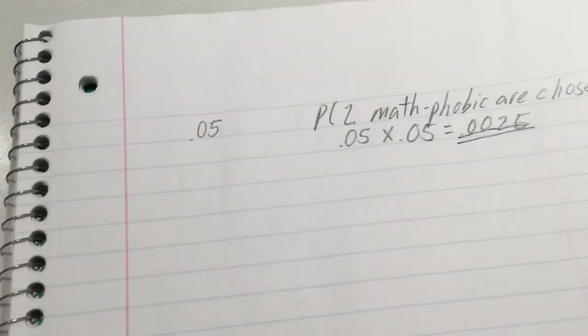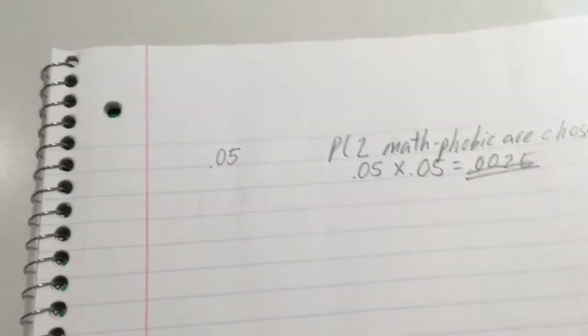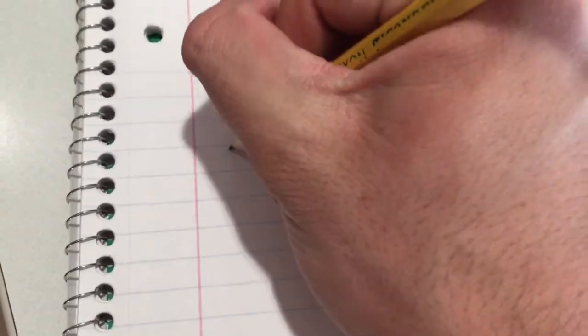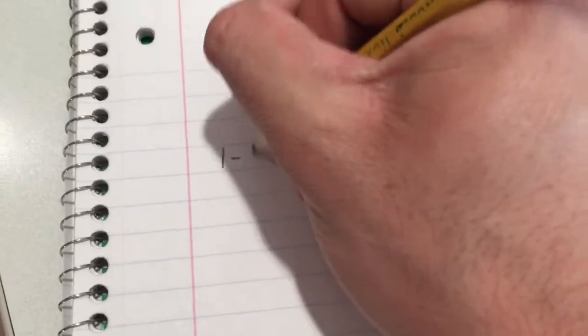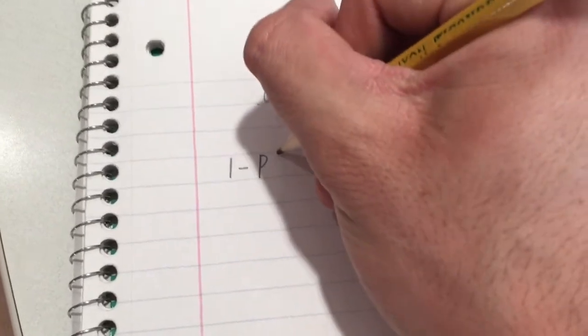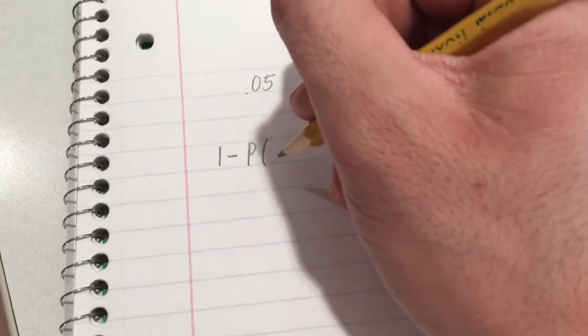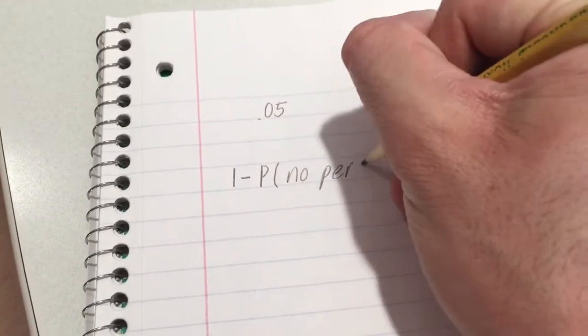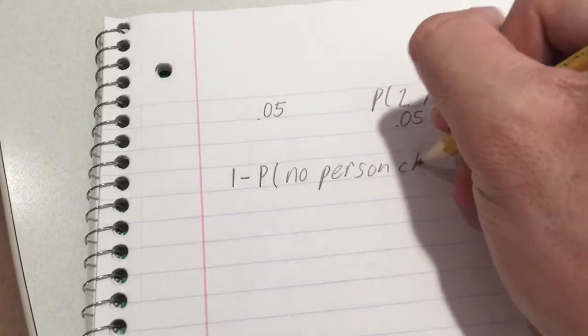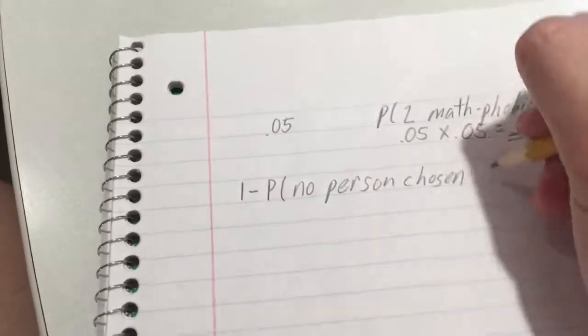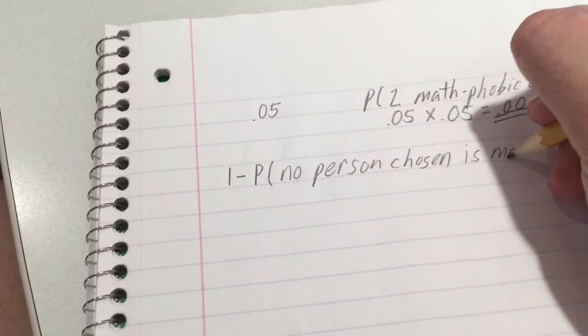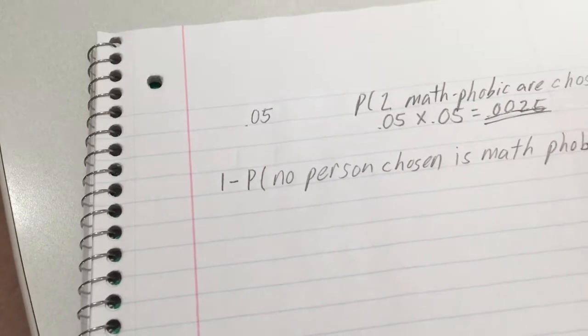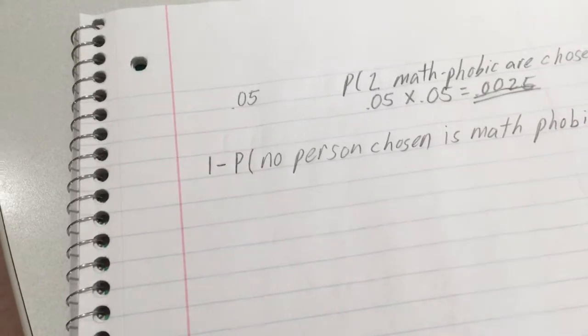Now for the second half, to find the probability at least one is math-phobic, we use the equation 1 minus the probability that no person chosen is math-phobic. Keep in mind, this is to find the probability at least one person is math-phobic.